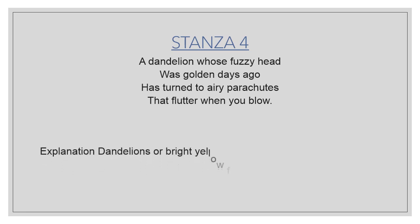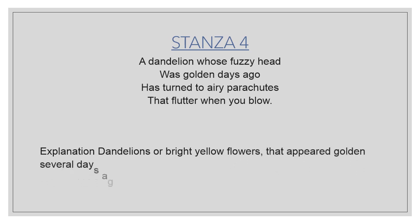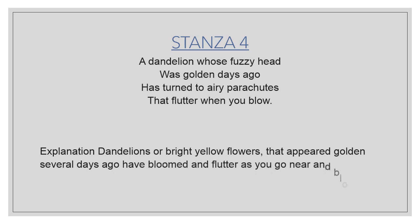Explanation: dandelions are bright yellow flowers that appeared golden several days ago. They have bloomed and flutter as you go near and blow at them. We have a habit of plucking the flower and blowing. The dandelion's fuzzy head was golden days ago and has now turned into an airy parachute — like an umbrella — that will flutter and move here and there in the air like a bird when you blow air at it.